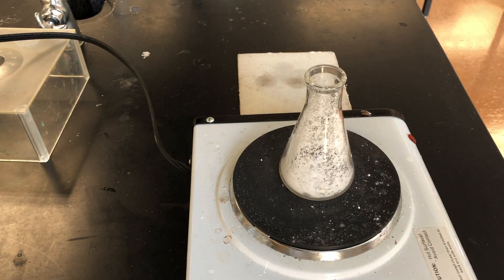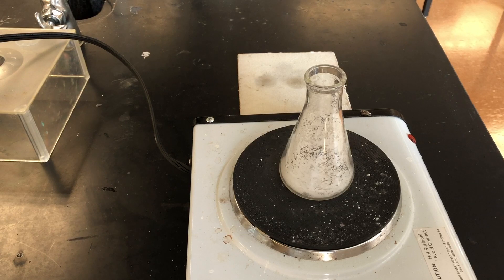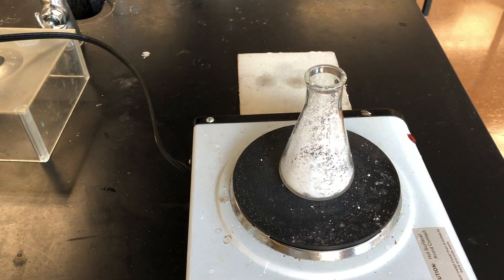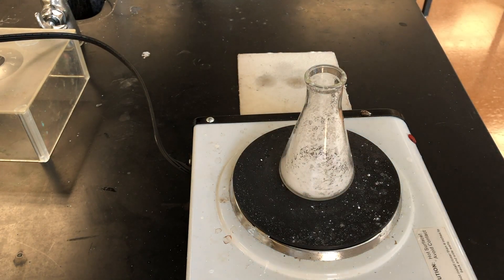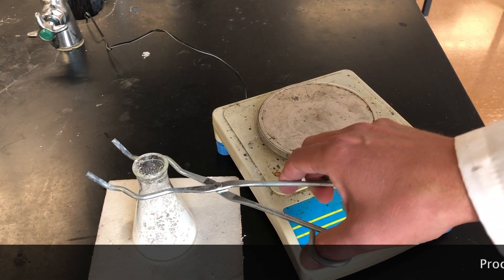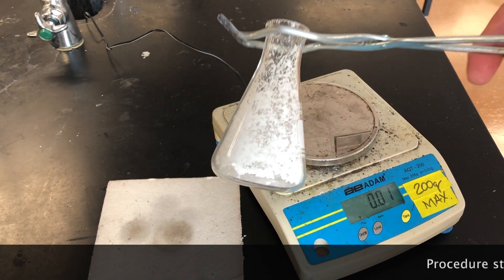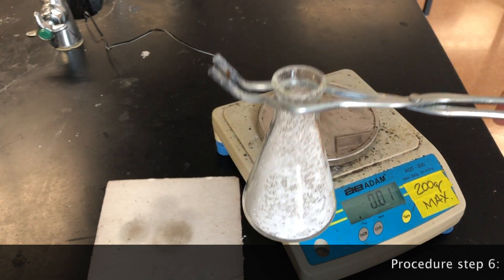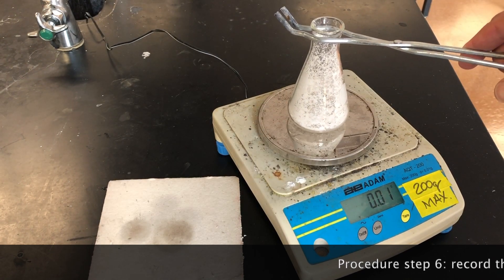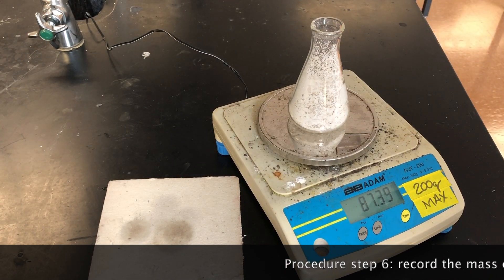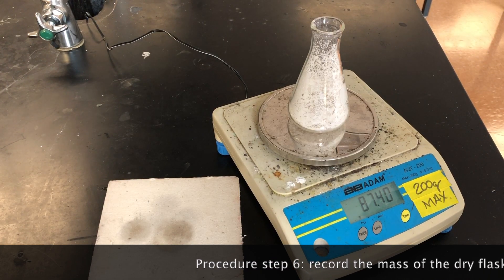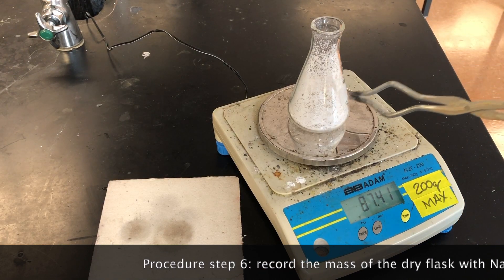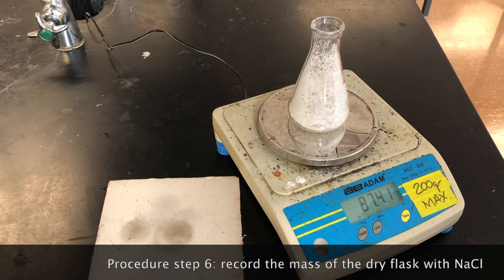Now that the steam has completely stopped, we will turn off the hot plate and set the Erlenmeyer to cool. Then we will be ready to take the final mass. We can look at the Erlenmeyer flask and feel quite confident that the water is completely left. There is no sign of moisture anywhere on the Erlenmeyer.